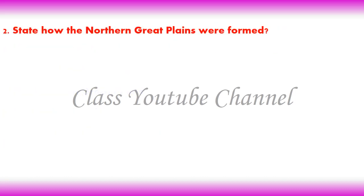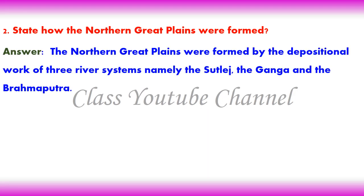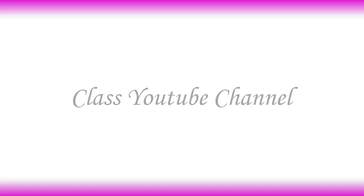2. State how the Northern Great Plains were formed? Answer: The Northern Great Plains were formed by the depositional work of three river systems, namely the Sutlej, the Ganga, and the Brahmaputra.